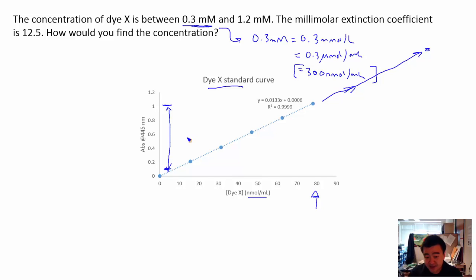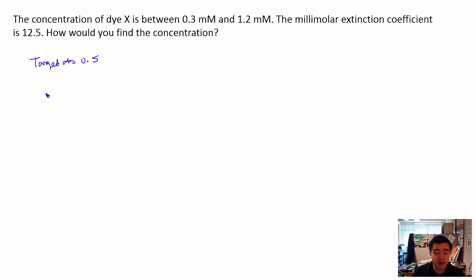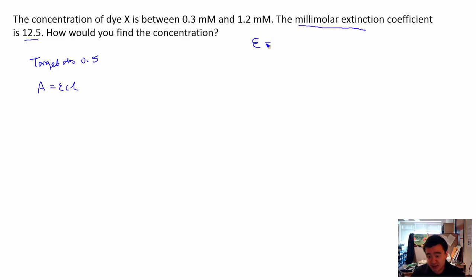A nice target absorbance is about in the middle of this range, which is about 0.5 — that is our target absorbance. So if our target absorbance is 0.5, we need to ask: what concentration will give us that? We know the Beer-Lambert law: A = εCl. For this particular dye, the millimolar extinction coefficient ε is 12.5 per millimolar per centimeter.